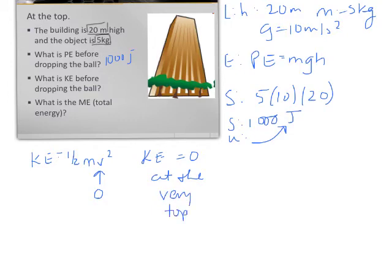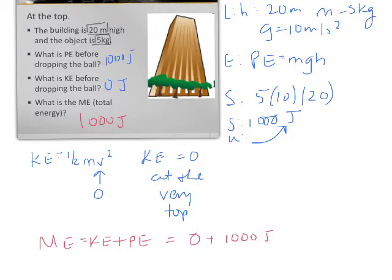And then it asks, what is the ME, total energy? If you remember what it said on the other slide, ME is equal to KE plus PE, which is going to be zero plus 1,000, or 1,000 joules. To kind of make an all-encompassing statement here, at the top, ME equals PE because KE equals zero.